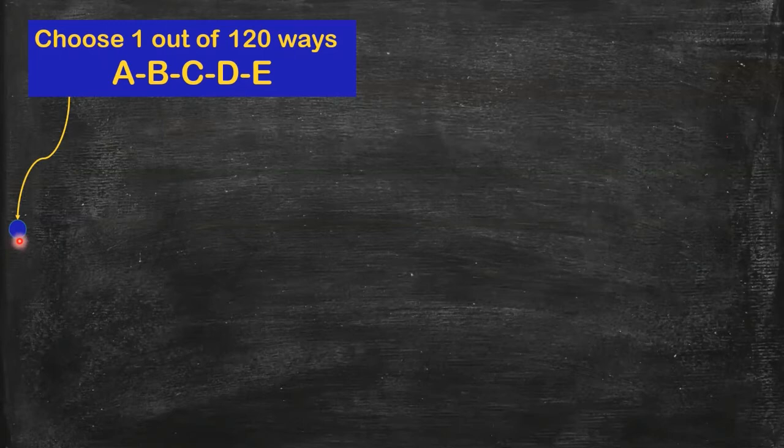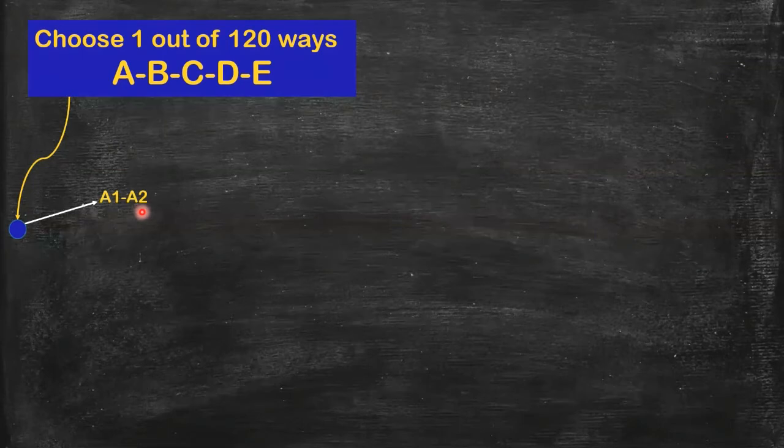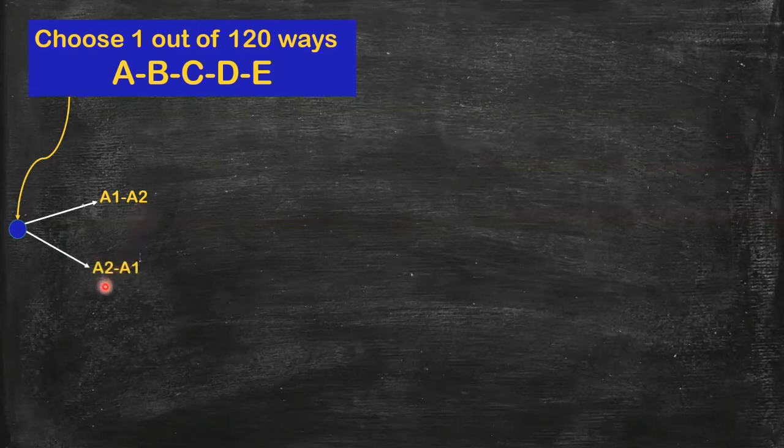Now, let's arrange couple A first. We know their position could be like this: couple A1 and A2. And then it's also possible that they switch positions, like this: A2 first, and then A1.